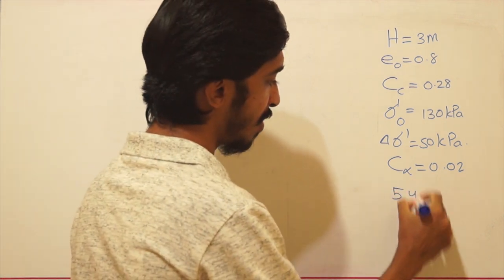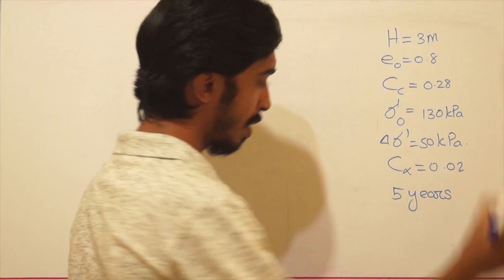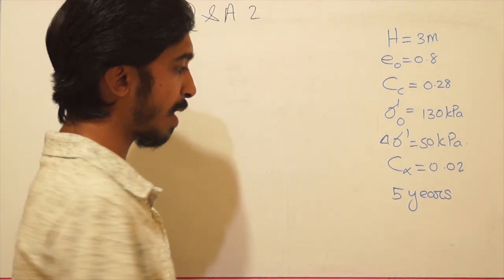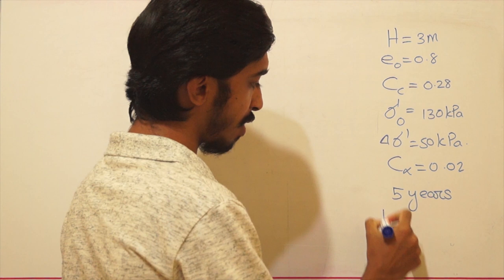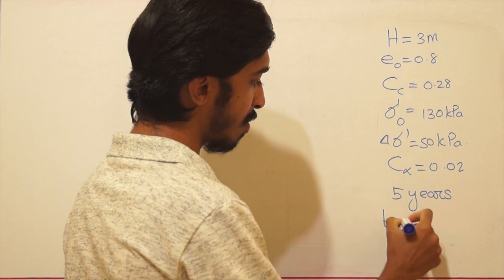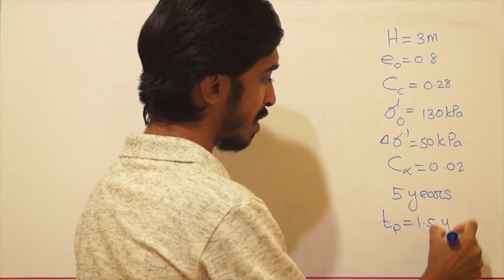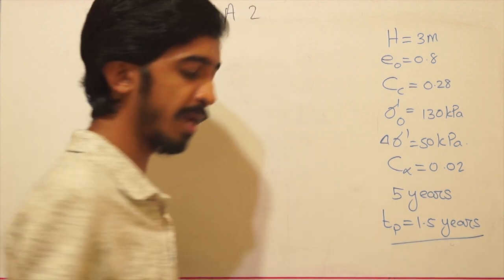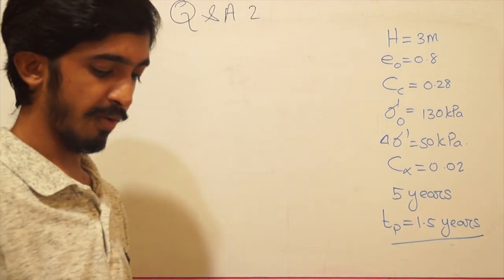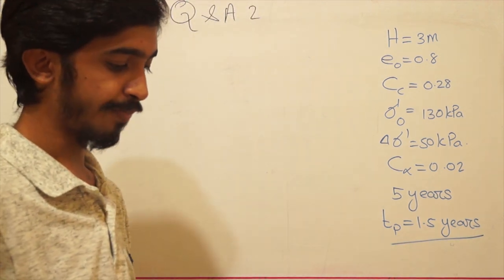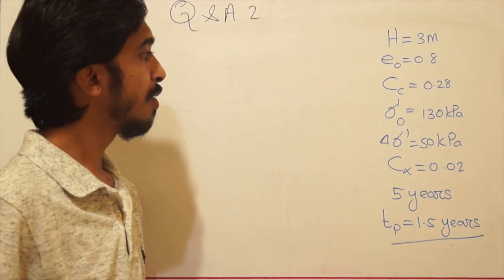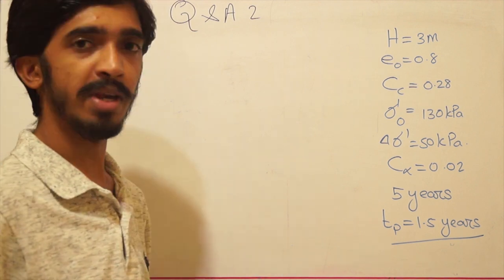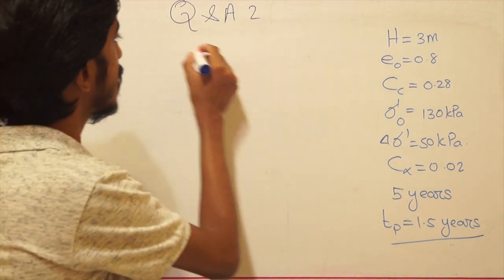They are asking us to find the total settlement after 5 years. The time for primary consolidation is given as 1.5 years. With these data values, we have to note that when it comes to settlement, it has three portions.